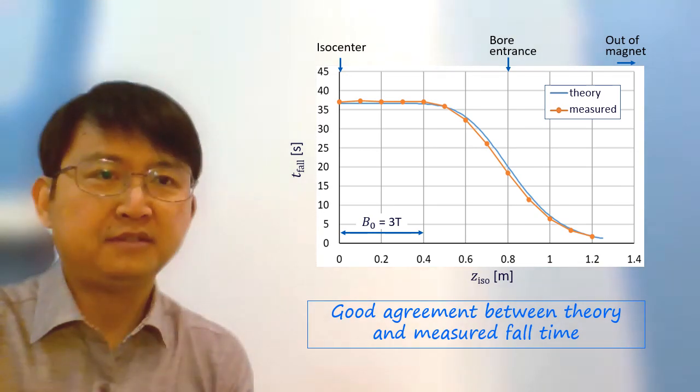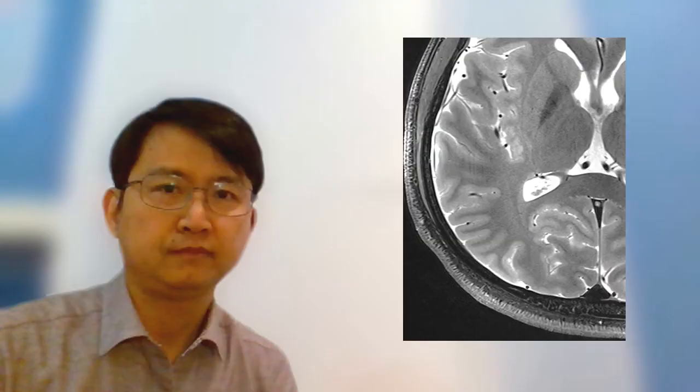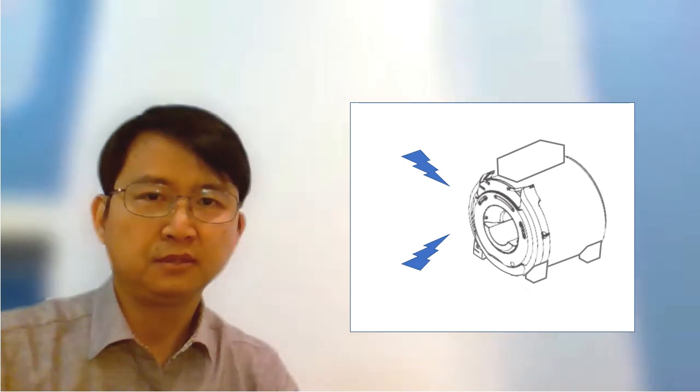And here is the result. Our theory agrees very well with experimental data. So why is all this important? Ultra high field MRI has a great potential to image human body at great details. But acoustic noise and vibration inside the magnet increases with the magnetic field. Can we dampen this vibration?